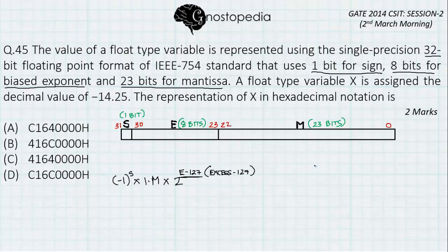A float type variable X is assigned the decimal value of minus 14.25, so I can write it as float X equals minus 14.25. Now, as said in the question, float type variable is always represented using the single precision 32-bit IEEE 754 format. That is, it will be represented in this format. Now let us see how to convert minus 14.25 into this format.